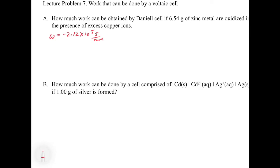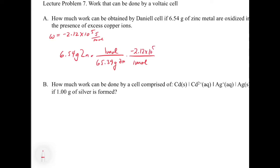We don't have one mole of zinc — we only have 6.54 grams. So we use the work as a unit conversion. Using the molar mass of zinc (65.39 g/mol), we convert grams to moles, then multiply by −2.12 × 10⁵ joules per mole of zinc. This gives W = −2.12 × 10⁴ joules. The amount of work depends on the number of moles involved in the reaction.